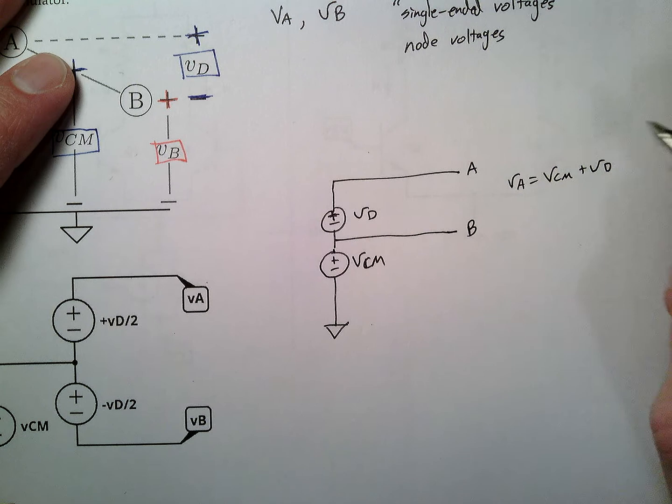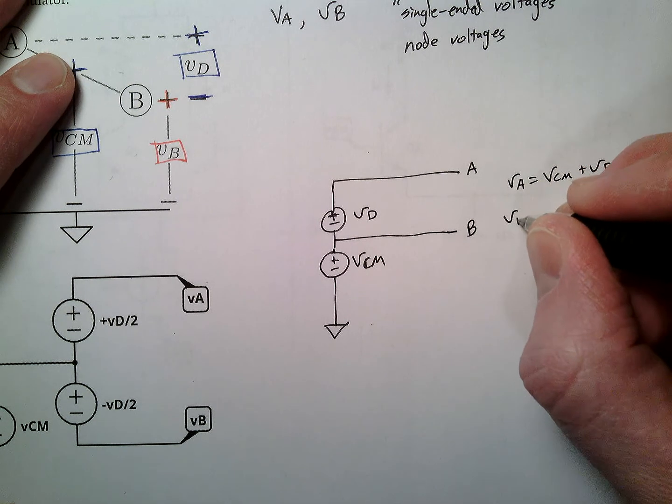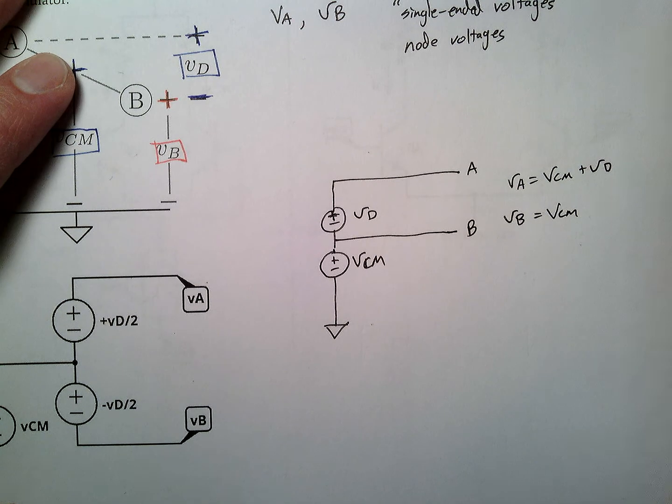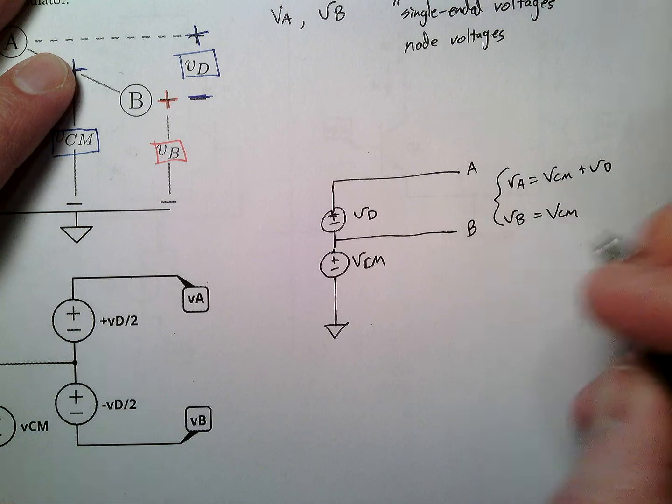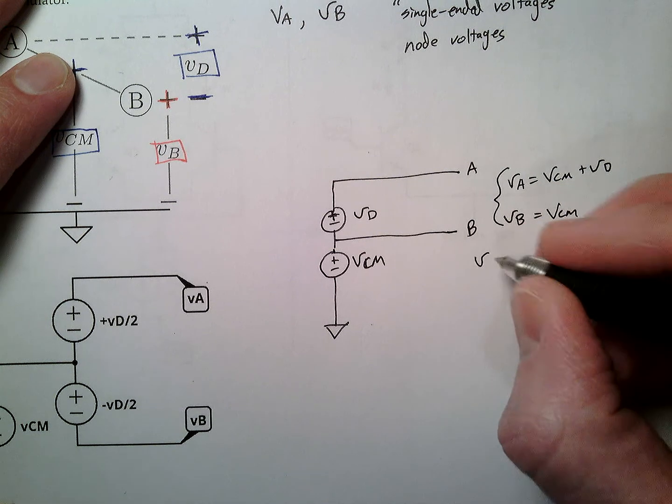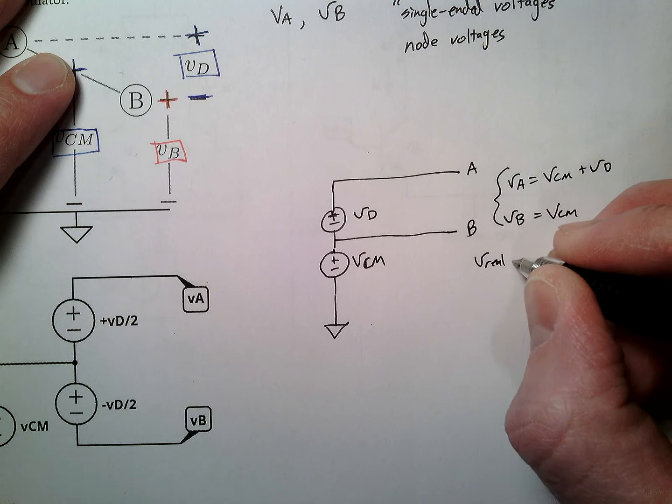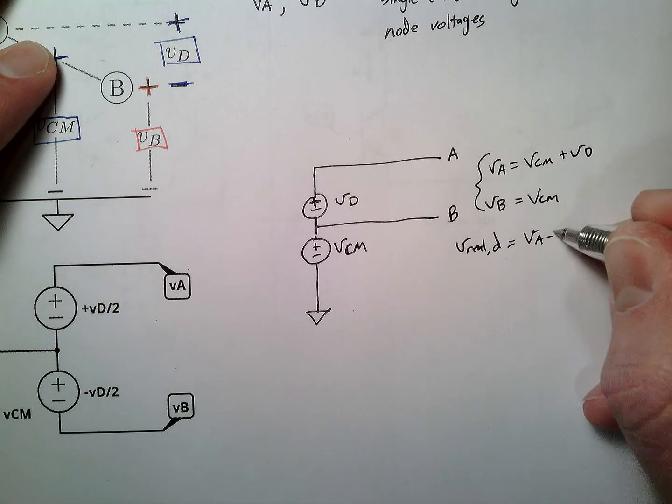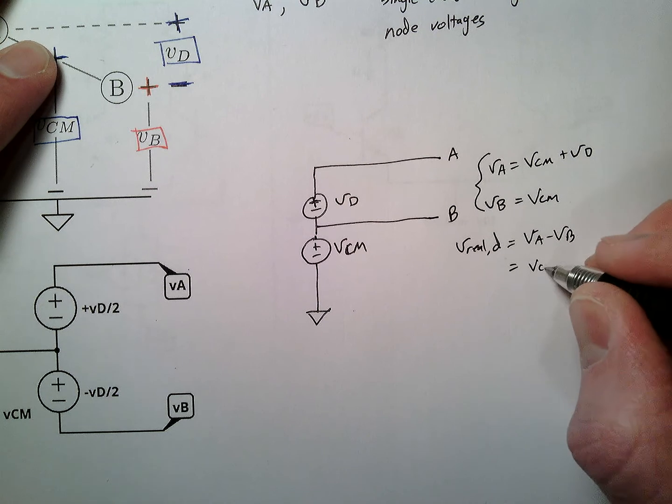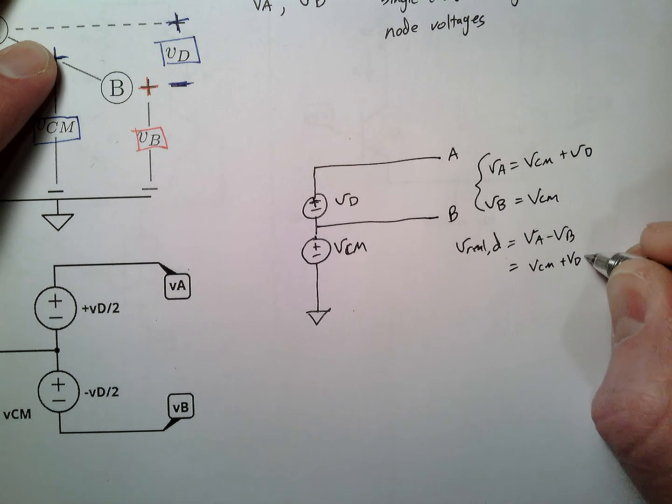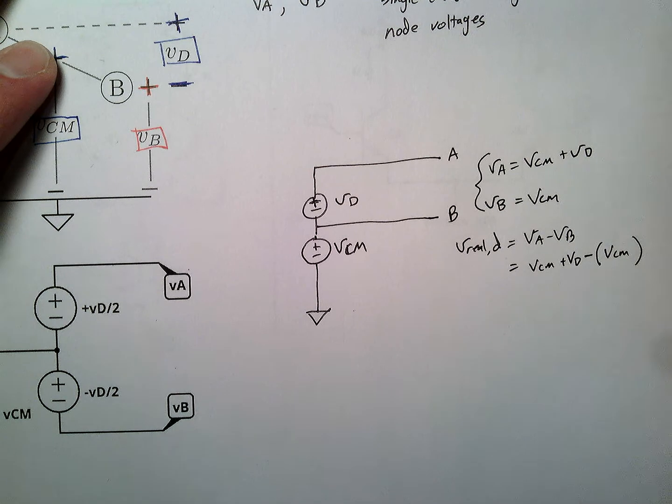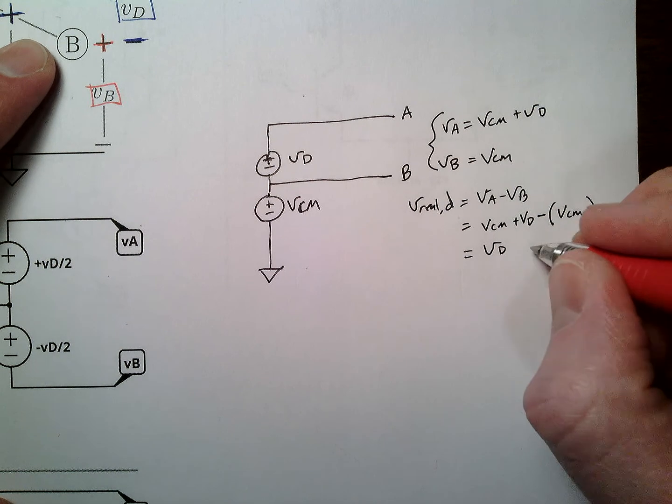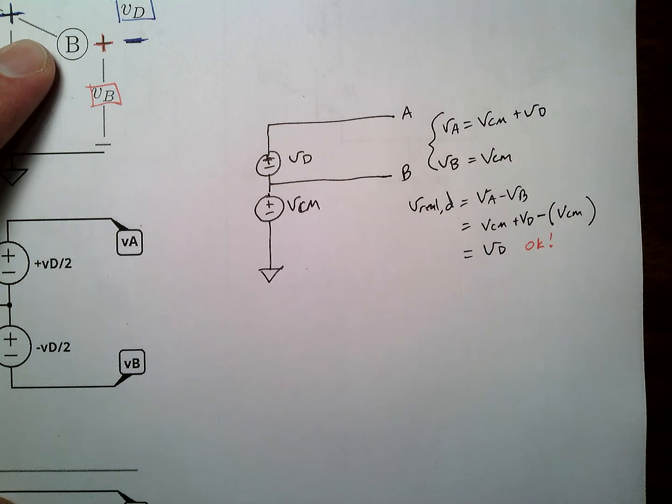We all know KVL. Look at this. It's been a long week. VB, just do this. That's just VCM. We're going to take this set of voltages and compute V real D. So the real differential voltage is VA minus VB, which is VCM plus VD minus VCM. I'm just substituting, which is VD, and that's okay.